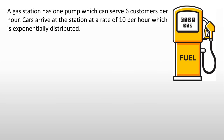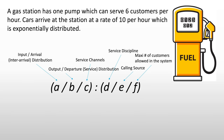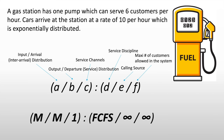The easiest approach is to do an example. A gas station has one pump which can serve six customers per hour. Cars arrive at the station at a rate of 10 per hour, which is exponentially distributed. According to our Kendall notation, the arrival distribution is Markovian or Poisson distributed. Our output is also Markovian — M. Letter C, since we only have one pump, our service channel will be one. Our service discipline is FCFS — first-come first-served. Our calling source is the entire population, so that would be infinite. And the maximum number of customers allowed in the system would also be infinite.